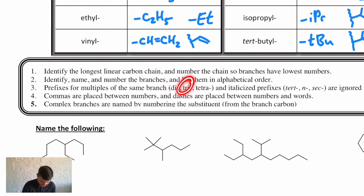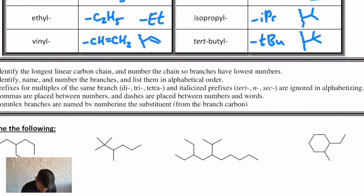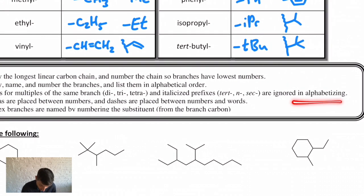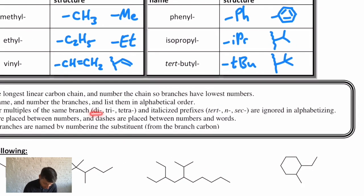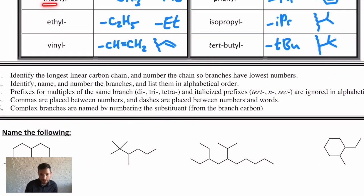Di meaning two, tri meaning three, tetra meaning four, and it goes on. Prefixes for multiples. And italicized prefixes are ignored in the alphabetizing, so tert-butyl is actually alphabetized under B. Dimethyl would be alphabetized under M. You'll see that when we do some examples.